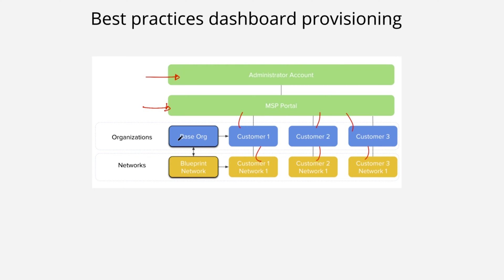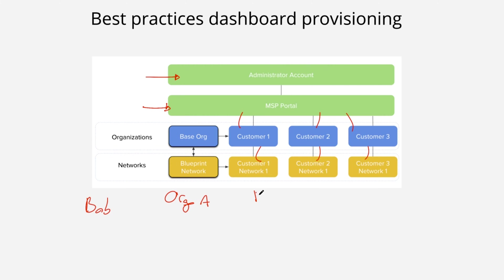Here are the best practices if you want to start fresh. What I would recommend is to create your own username and account — let's say Bob. At the beginning it's going to ask you to create an organization, so let's say you create Organization A. Then it will prompt you to create networks, so let's say Network A, and that's how you finish.